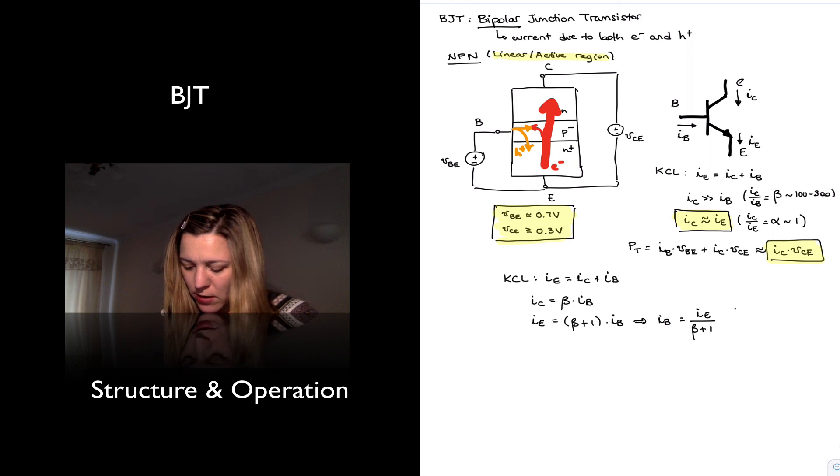And again, solving back from my IC equation, if I rewrite it down here, I will have IC equals beta times IB. And I substitute in IB with that expression that I just got, I will have beta divided by beta plus 1 times IE. And since alpha is the ratio between IC and IE, it follows that this expression here is actually alpha.